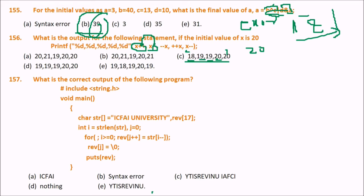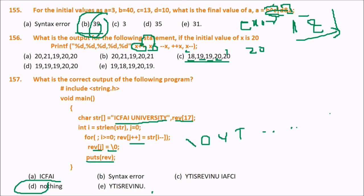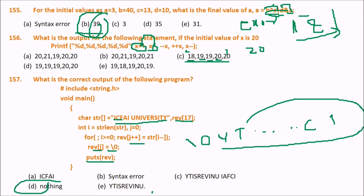What is the output of the program that reverses the string 'i5university'? The answer is D — nothing is printed. The reversal code places '\0' as the first character of rev, so when puts(rev) encounters '\0' immediately, it prints nothing and stops.